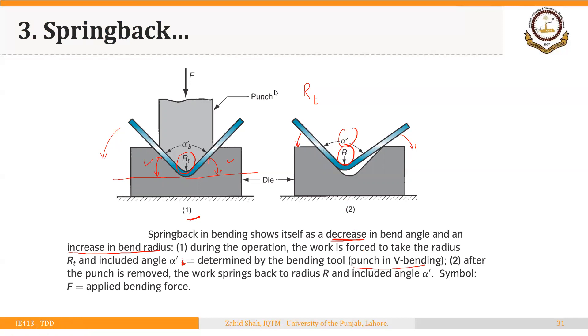This springback can be compensated using over bending or using bottoming dies — that is, squeezing the part between punch and die until the plastic deformation is complete.